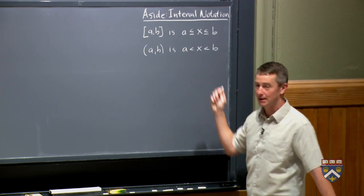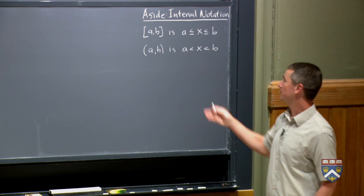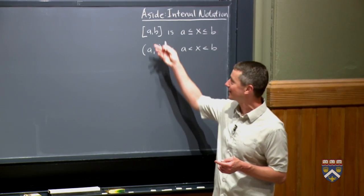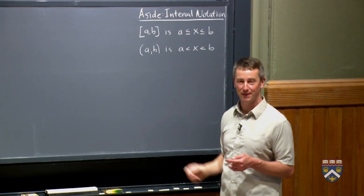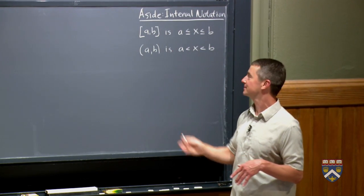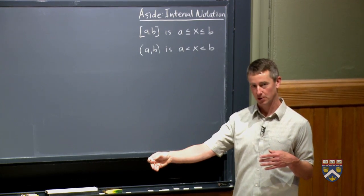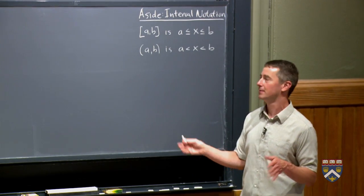When we use the rounded ones, which we call parentheses, then we don't include the endpoints. And I think this is really nice notation. It actually looks like this includes a little bit more than this, which is exactly what it means. This doesn't include the endpoints, this does. And you can mix and match. You can have a closed interval on one side, open on the other, and vice versa.